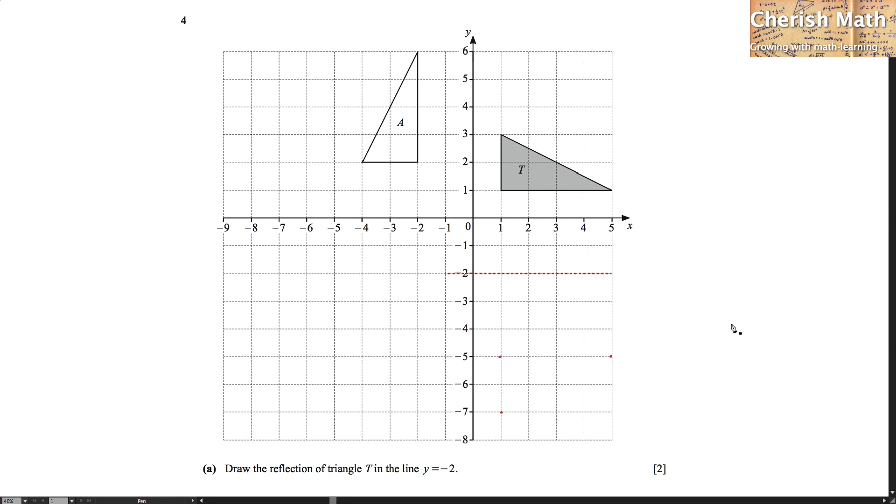The last step we need to take here is by joining the three dots by using a ruler and pencil. Here it goes. Now, this triangle labeled in red color is in fact an image of triangle T shaded here. So this is our solution for part A.